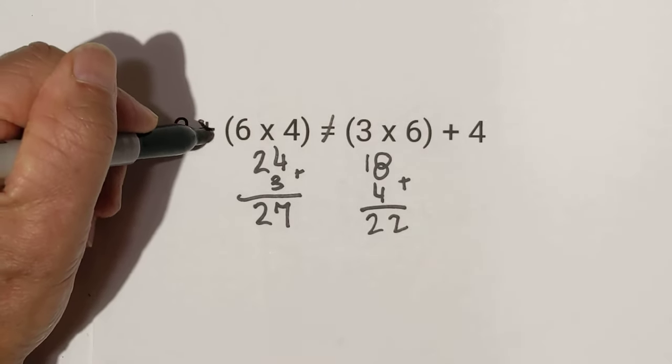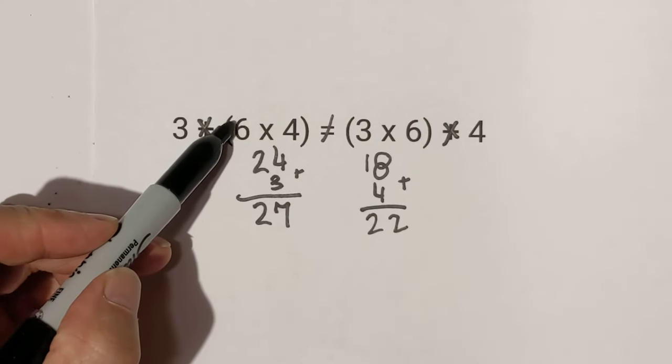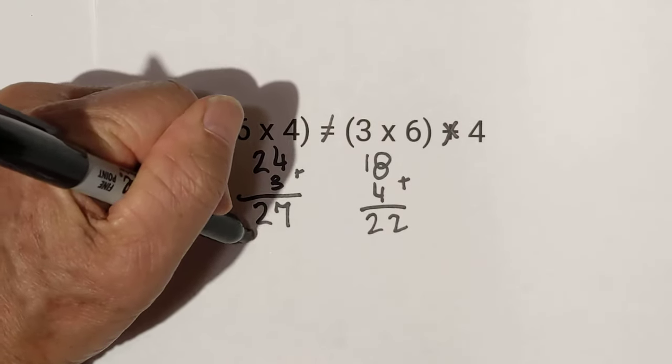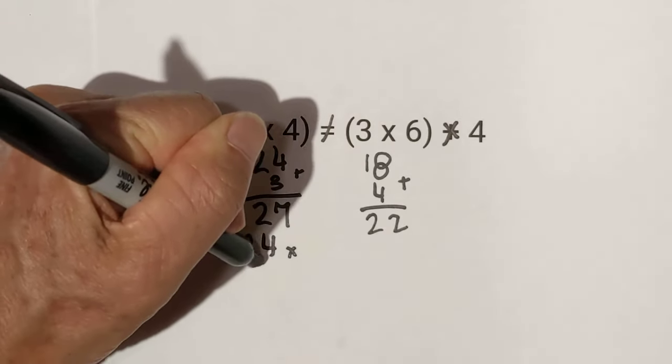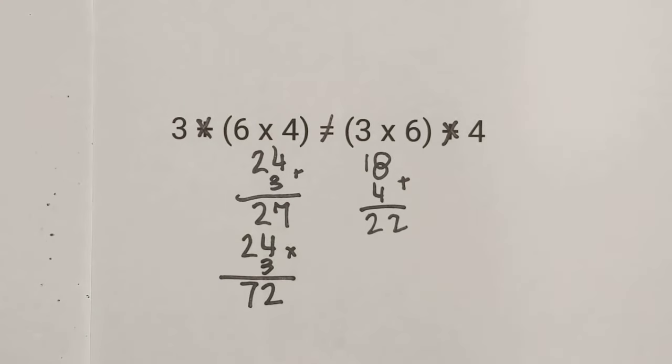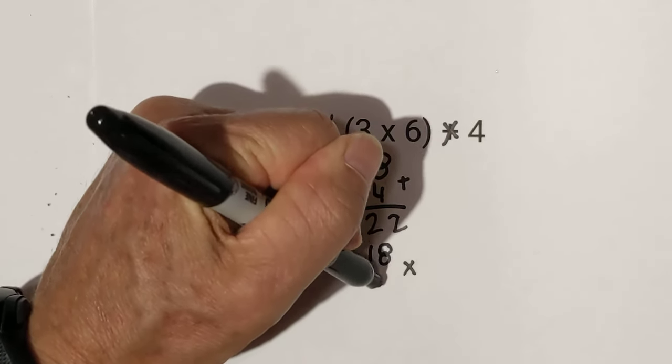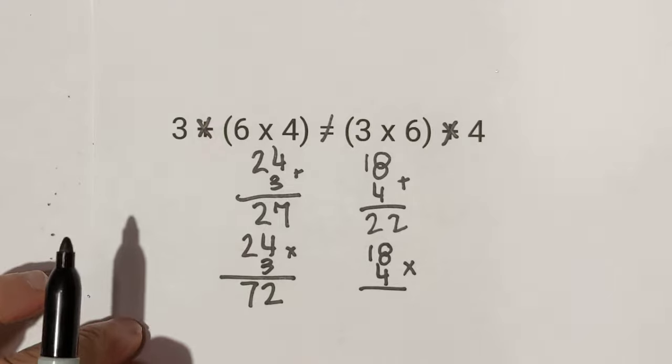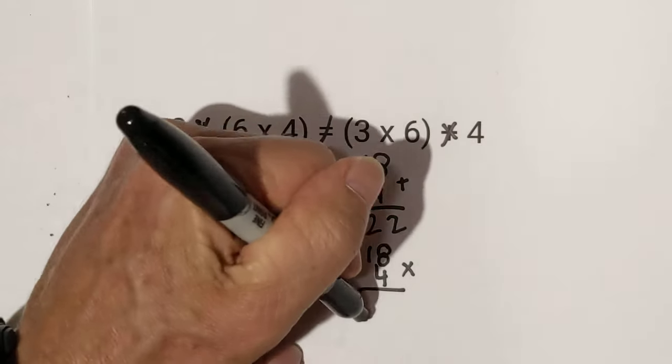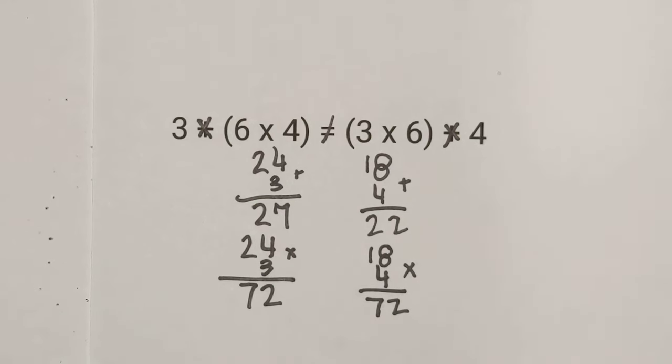If this was multiplication, they would be equal. 6 times 4 is 24, 24 times 3 is 72. 6 times 3 is 18, 18 times 4 is also 72. So they are equal.